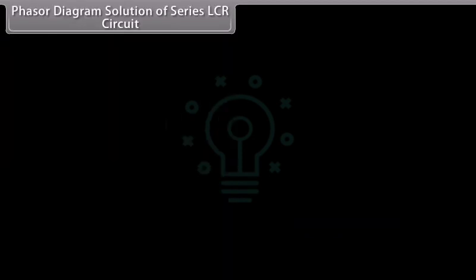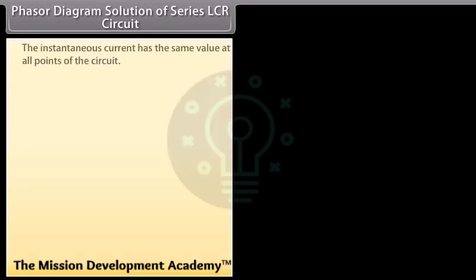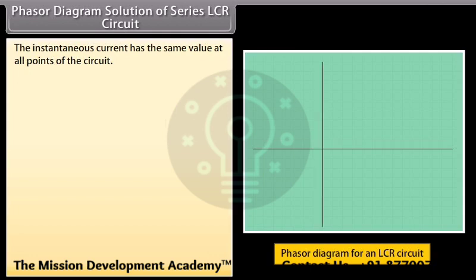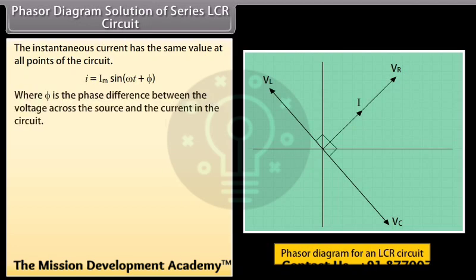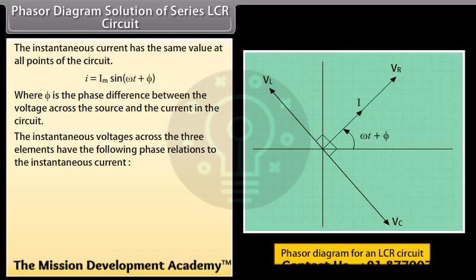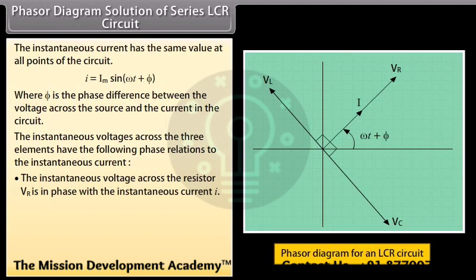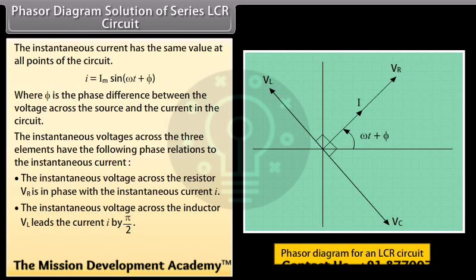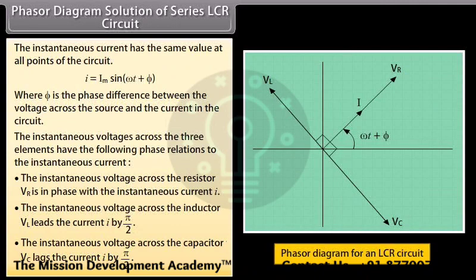Phasor diagram solution of series LCR circuit. The instantaneous current has the same value at all points of the circuit: I = Im sin(ωt + φ), where φ is the phase difference between the voltage across the source and the current in the circuit. The instantaneous voltage across the resistor Vr is in phase with the current I. The voltage across the inductor Vl leads the current I by π/2. The voltage across the capacitor Vc lags the current I by π/2.